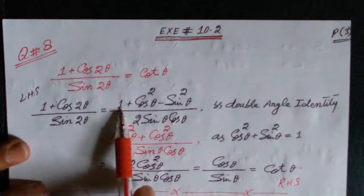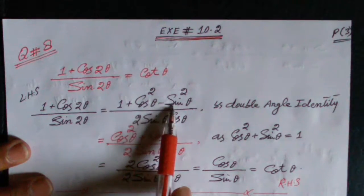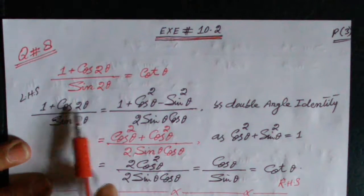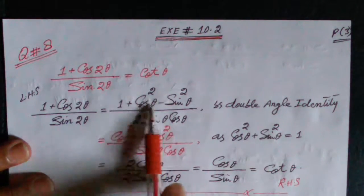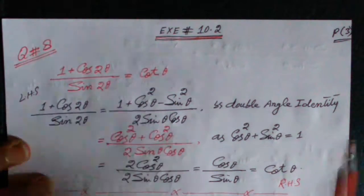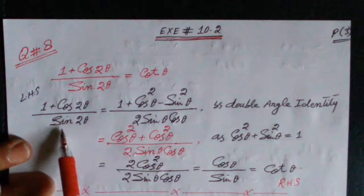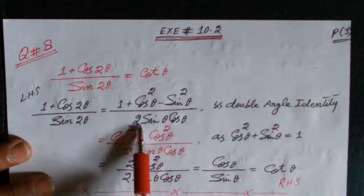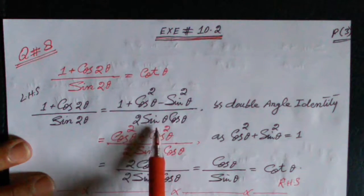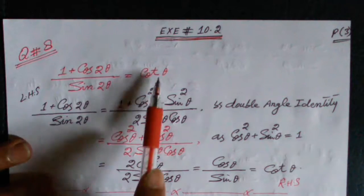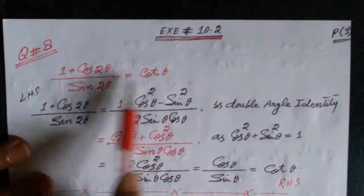This is equal to 1 plus (cosθ whole square minus sinθ whole square) by the double angle identity. sin 2θ is equal to 2 sinθ cosθ by the double angle identity. Because the target is θ, we have to convert 2θ into θ.